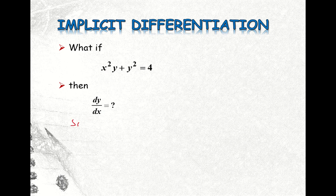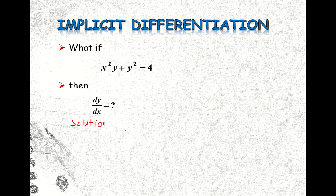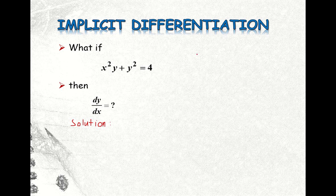Here is our solution. So what is the rule here in our implicit differentiation? We need to take the derivative of each term on both sides. So on the left side we have the first term, which is the product of x squared and y. Our second term is y squared. On the other side we have a constant. For the first term, we are going to use the product rule in differentiation.